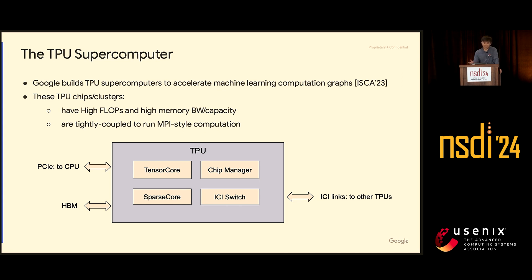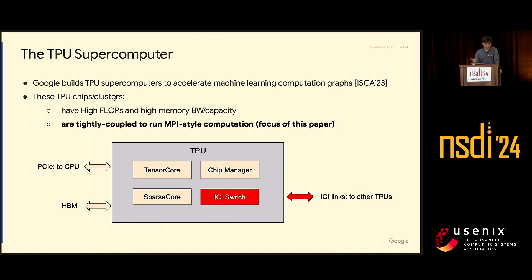These TPUs are tightly coupled. We have a backplane network, in contrast to conventional CPU clusters. They run MPI-style computation, so everything works in lockstep with a lot of collectives in the process. In this paper, we primarily talk about the ICI part of the TPU supercomputer — that's the interconnect. On every TPU chip there is a module we call an ICI switch. The chip talks to a fast interconnect we call the inter-chip interconnect, or ICI.